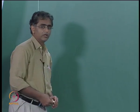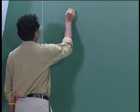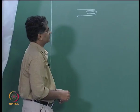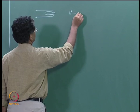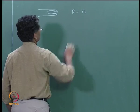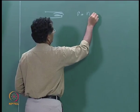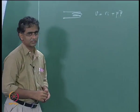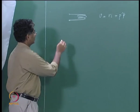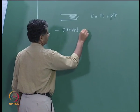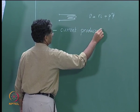Let us begin by reviewing what we did in the last class. We started out by looking at the model for a simple wire loop. We found that if this is excited by DC we can write a simple equation V equals R into I. However, if it is excited by AC we need to add another term P times Ψ. We saw in the last class that a current in a loop like this produces a magnetic field.